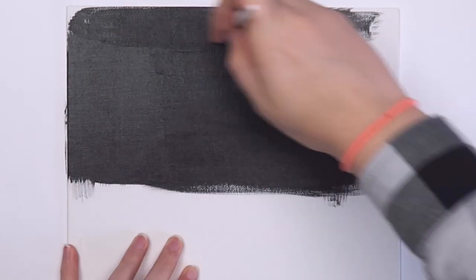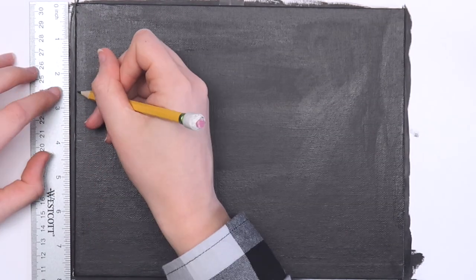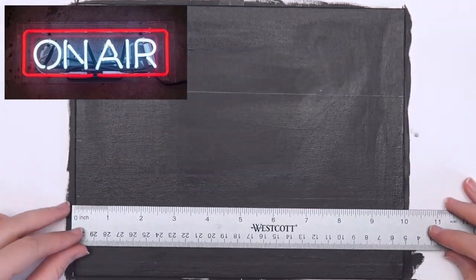Start by painting your canvas black. When that dries, sketch out your design with a pencil. I thought it would be cute to make one of these on-air signs that you'd see at a radio or TV station.